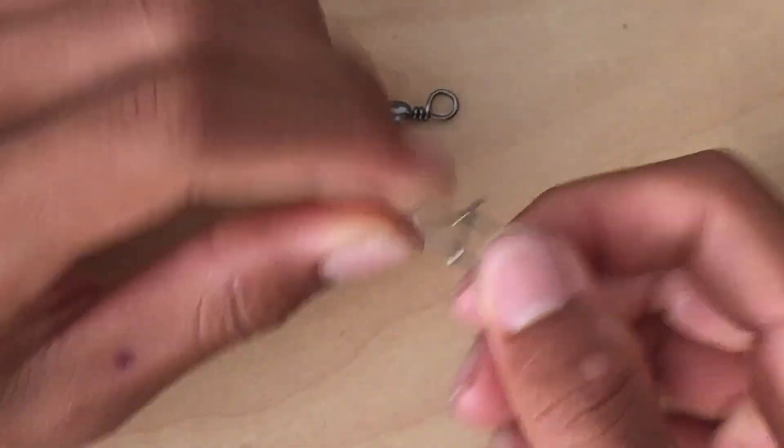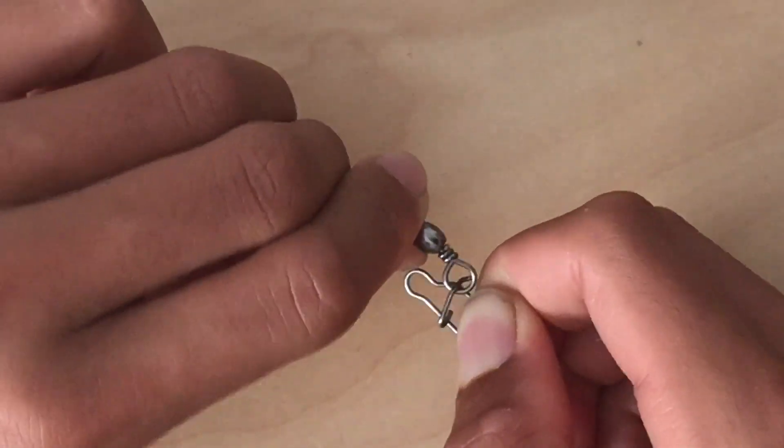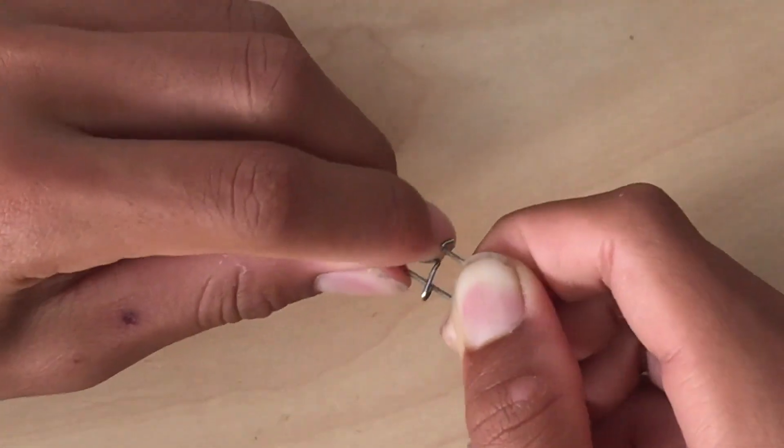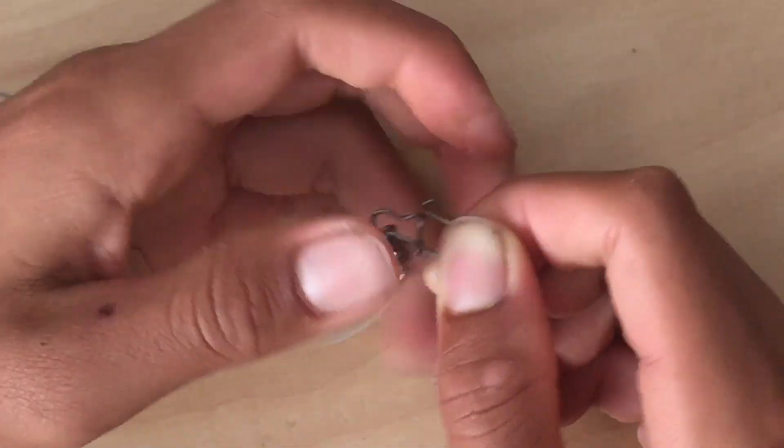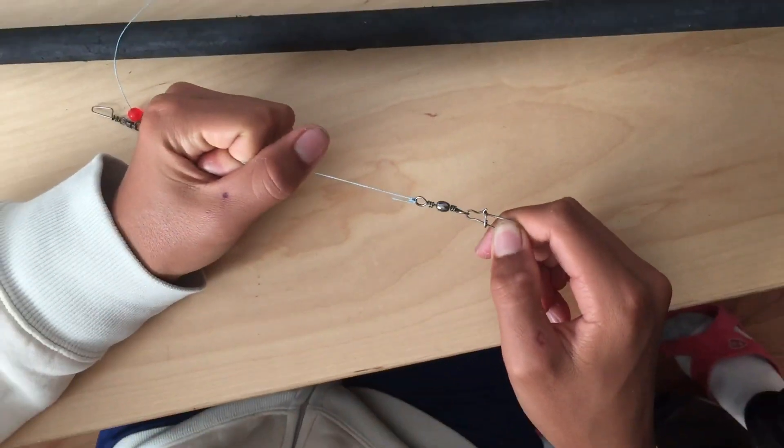Clip this side open. And then put the eye of the barrel swivel through this one. And then down, like this. Close it. Close this one. And it's good. Close this one. Close that one.